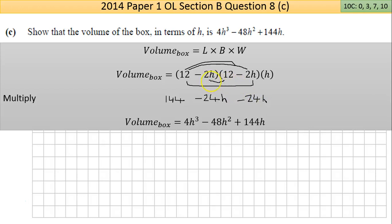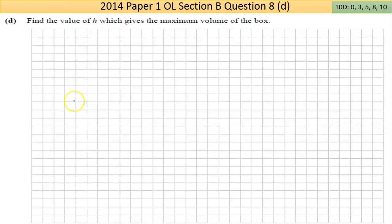Then the minus 2h by 12 is minus 24h again. And then minus 2h by minus 2h, minus minus is a plus, 2 times 2 is 4, h by h is h squared. You're then multiplying that answer by h to do the final multiplication step. You'll see that the answer you get is the same as the answer you were given.